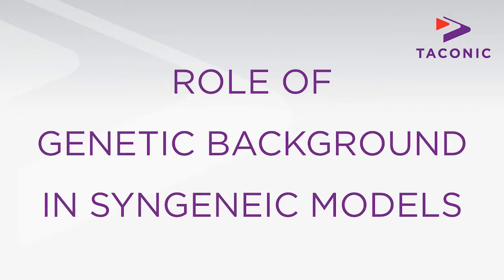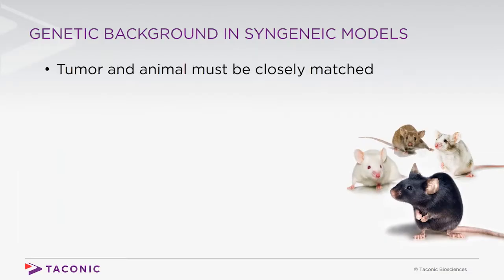Genetic background is an important consideration when designing studies involving syngeneic tumor models. Since these models depend upon the implanted tumor cells not being rejected by the immune system, it is critical that cell lines are genetically matched to the host. The most critical aspect is that the tumor and host are matched at major and minor histocompatibility loci. Even minor mismatches may lead to unintended tumor rejection, particularly through NK cell-mediated mechanisms.